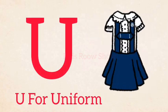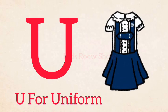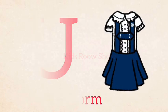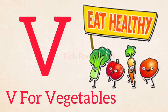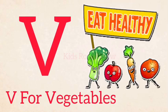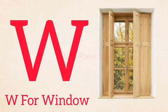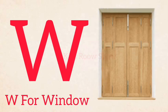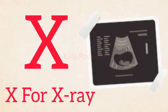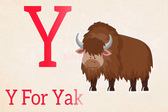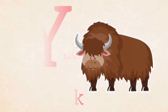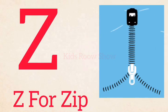U for uniform, V for vegetables, W for window, X for x-ray, Y for yak, Z for zip.